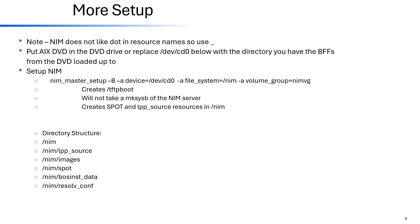To set up NIM you'll need an AIX DVD or ISO image. Run the nim_master_setup command and point it to the CD device or a directory where you've loaded the ISO images. When you run nim_master_setup it creates a filesystem called /tftpboot and creates a basic SPOT and lpp_source. As shown, I pointed it to my /nim filesystem and nimvg. The NIM directory structure under /nim includes: lpp_source, images (for mksysbs), spot, bosinst_data, and resolv.conf directories.